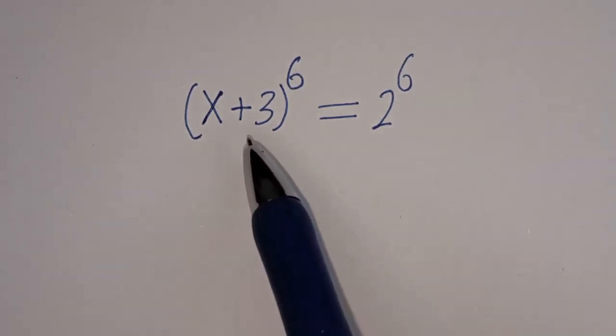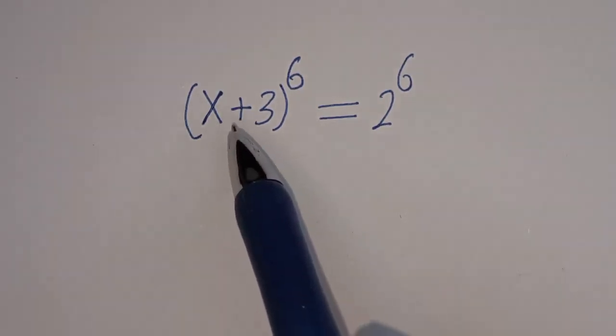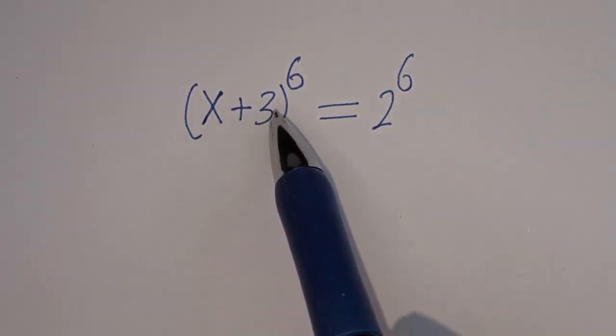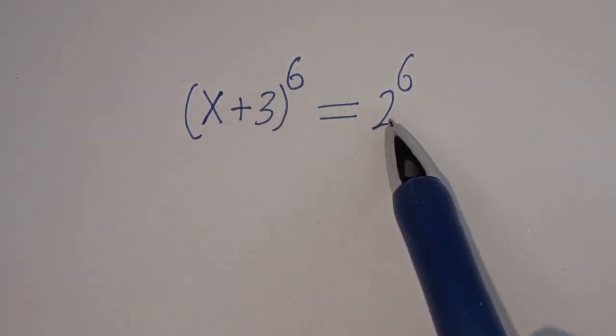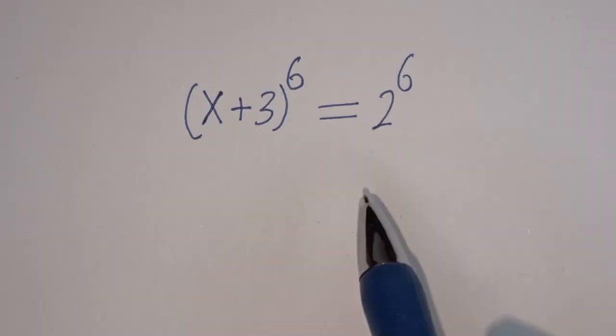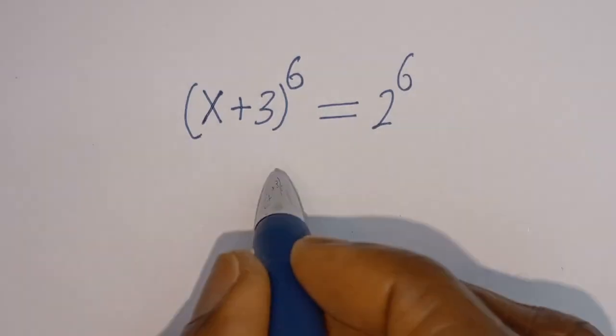Hello. How to solve for x in this equation: x plus 3 to the power of 6 is equal to 2 to the power of 6.